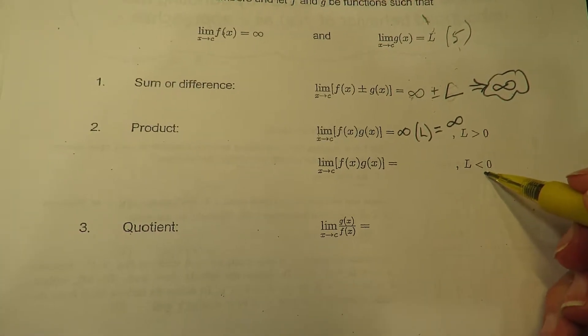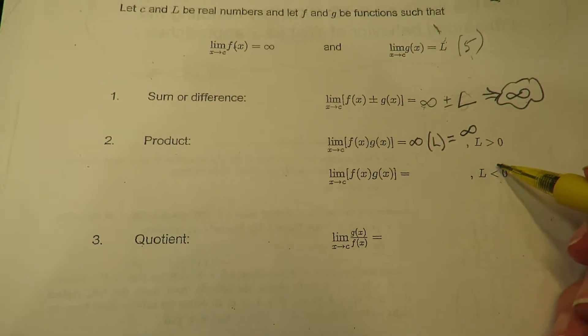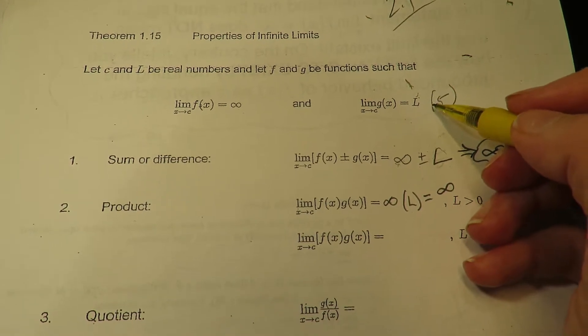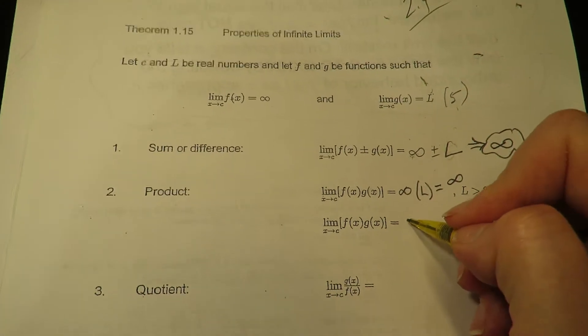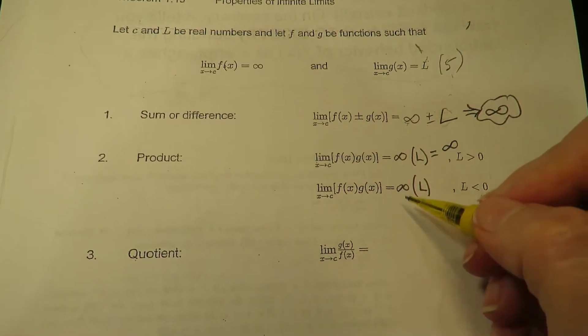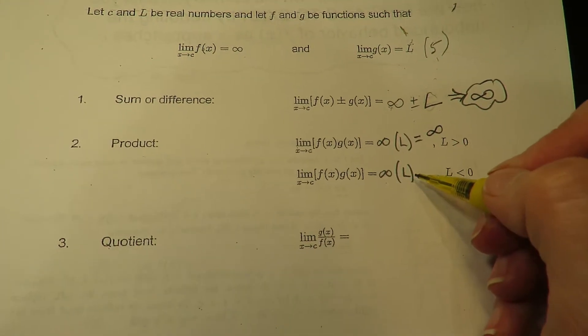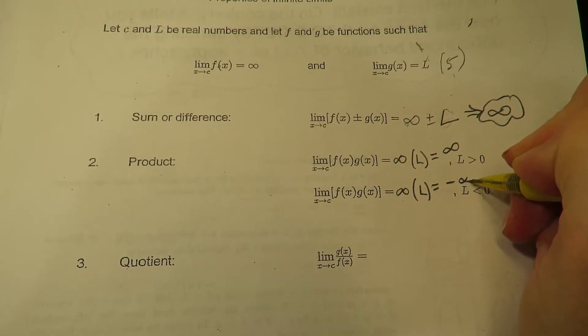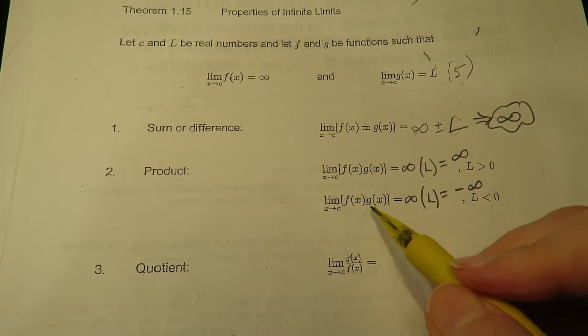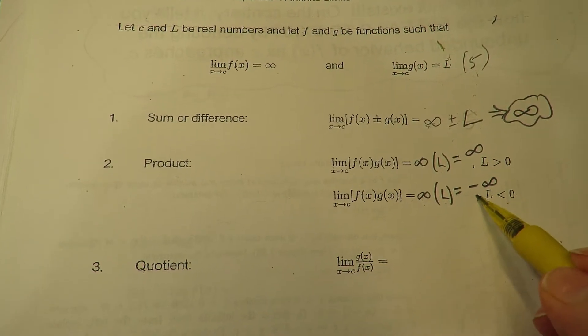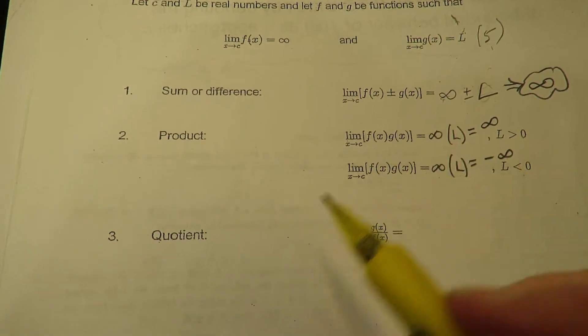Now here, watch this, L is a negative number now, that's what less than or equal to 0 means. So you can think of negative 5. So it's infinity times a negative number, so think of infinity times negative 5, for instance. What would that be? That would be negative infinity. So infinity times a negative number is going to be negative infinity.